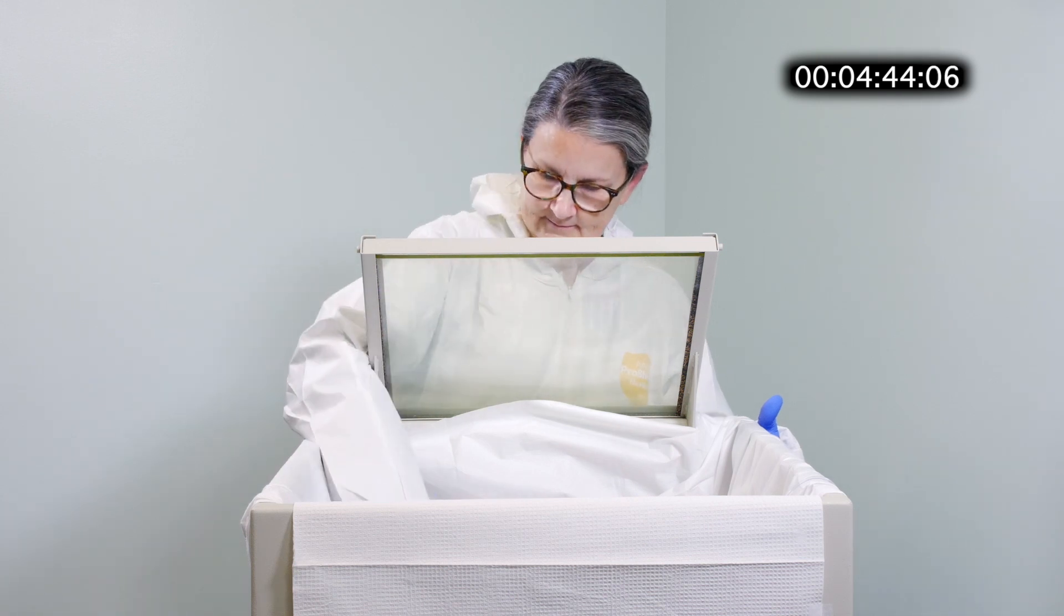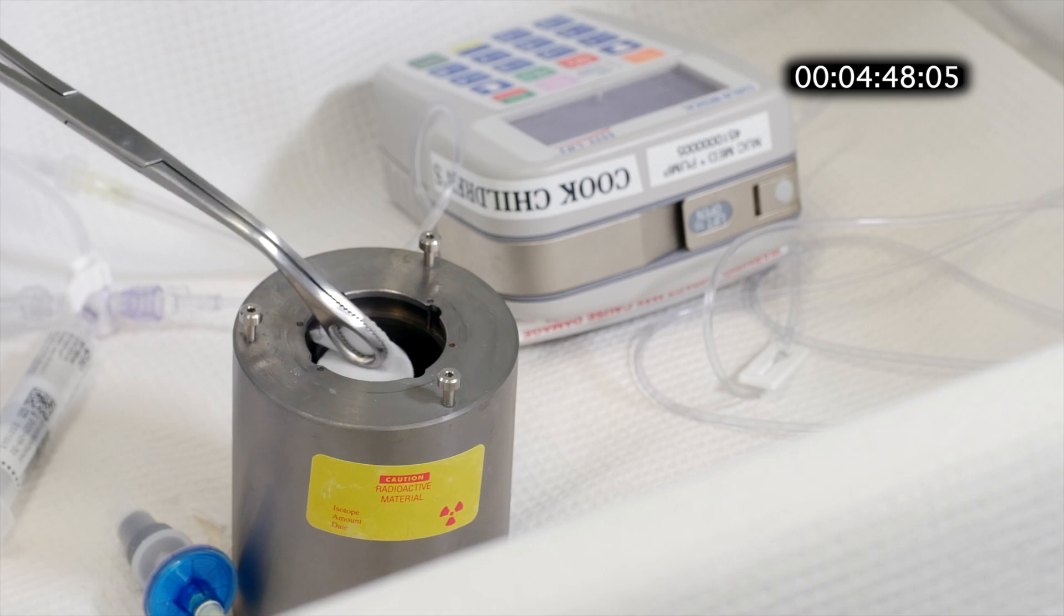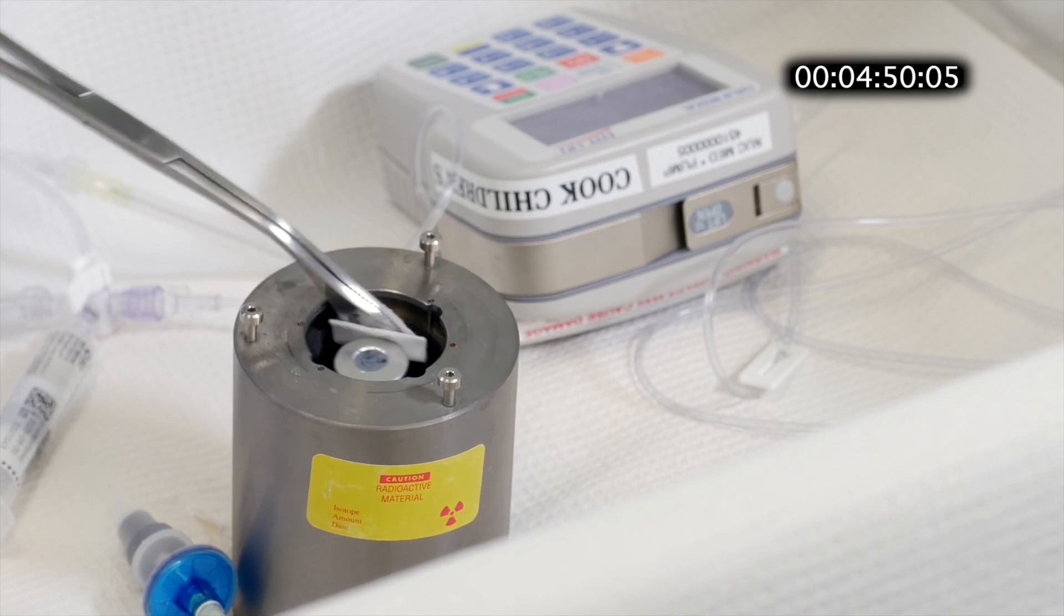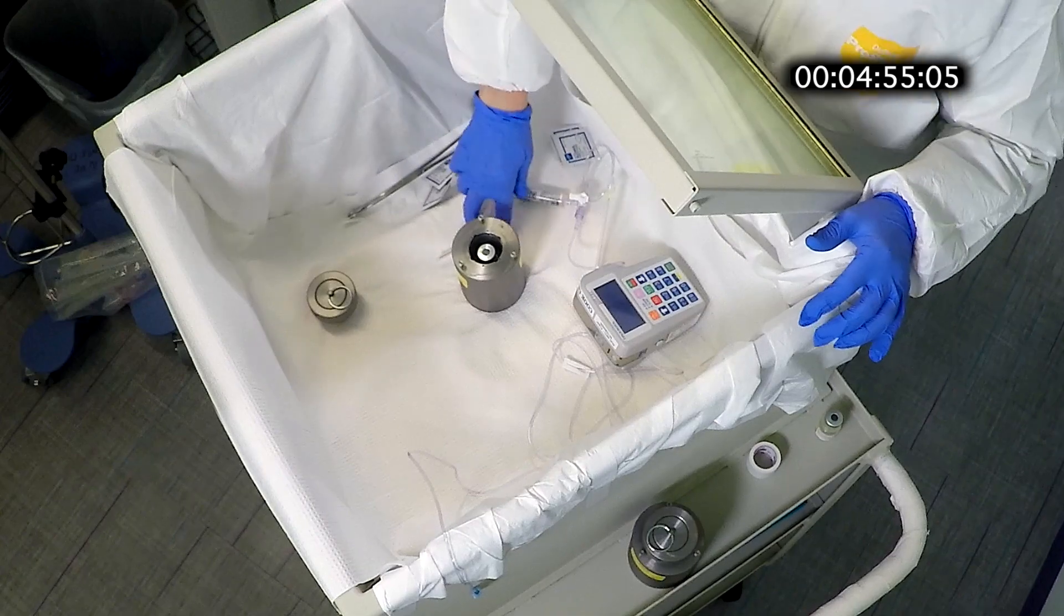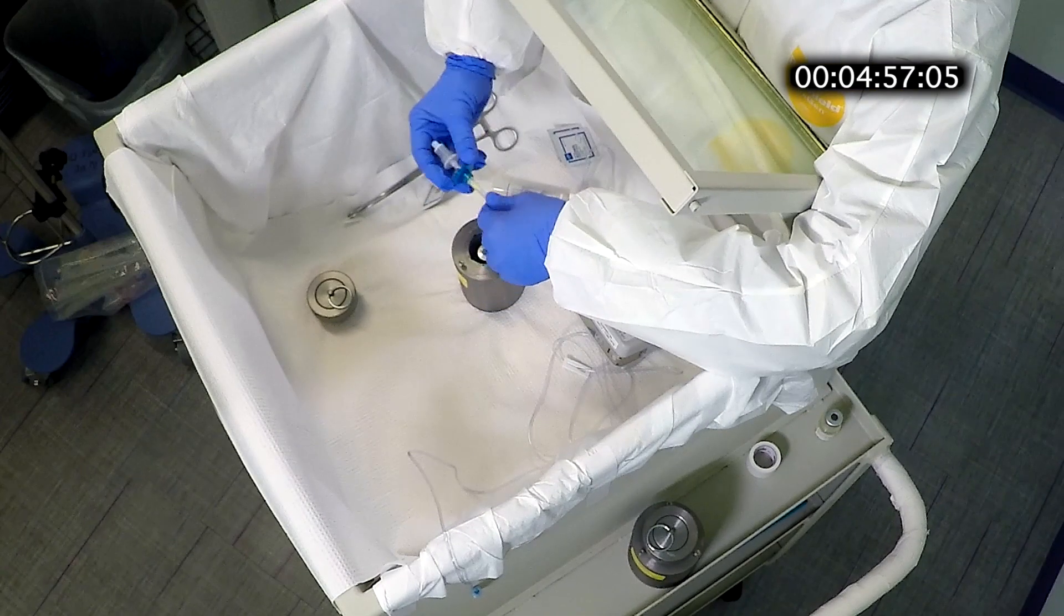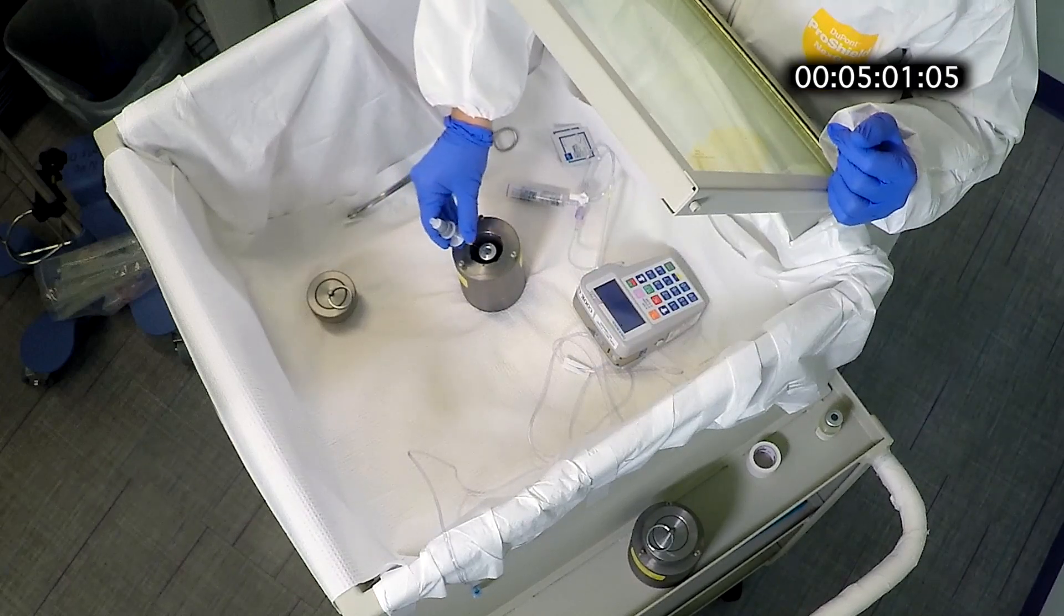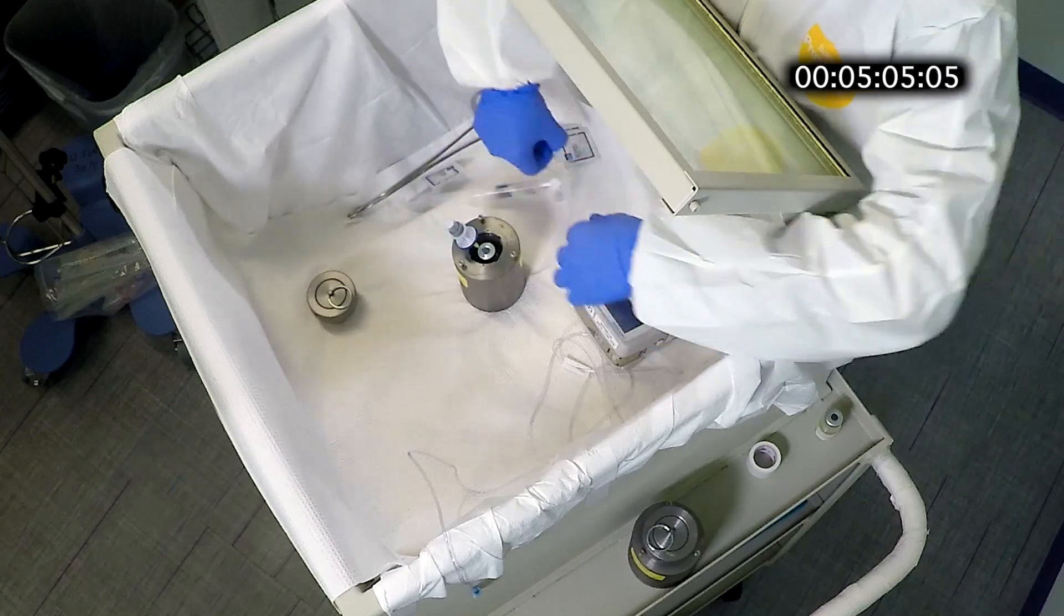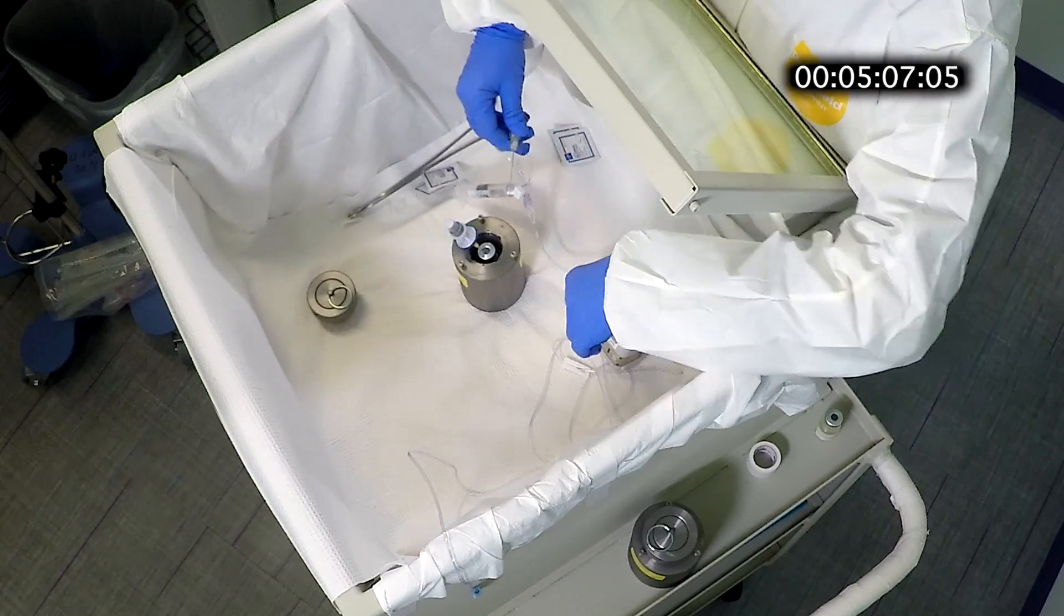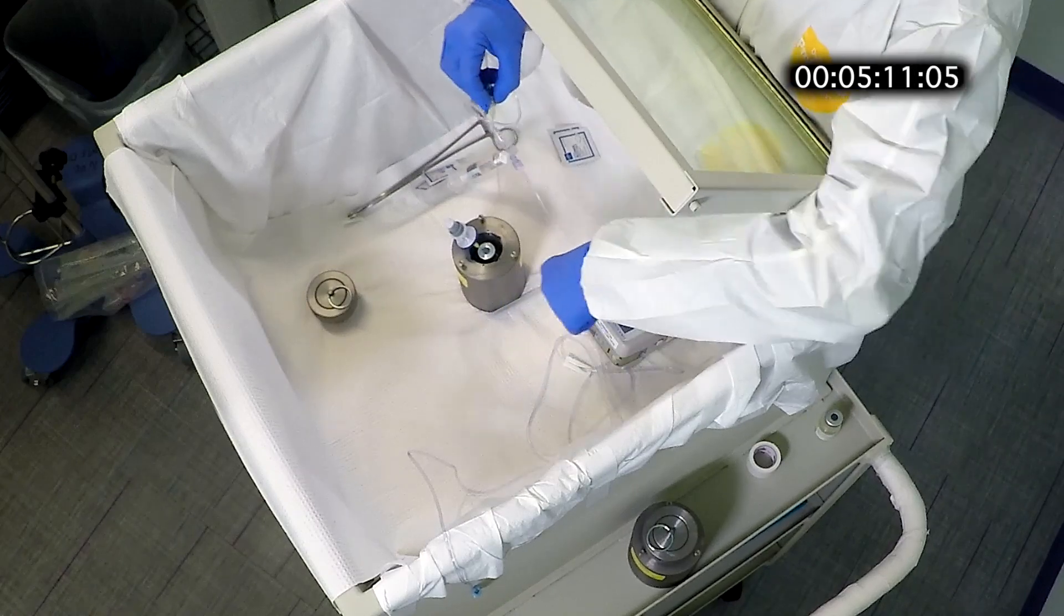The first step is to swab the vial and the shield with an alcohol prep pad. The next step is to insert the vent at an angle only about halfway down the needle making sure that it does not touch the liquid surface.